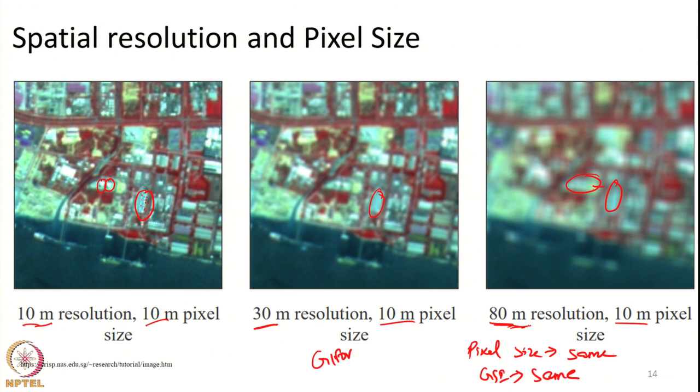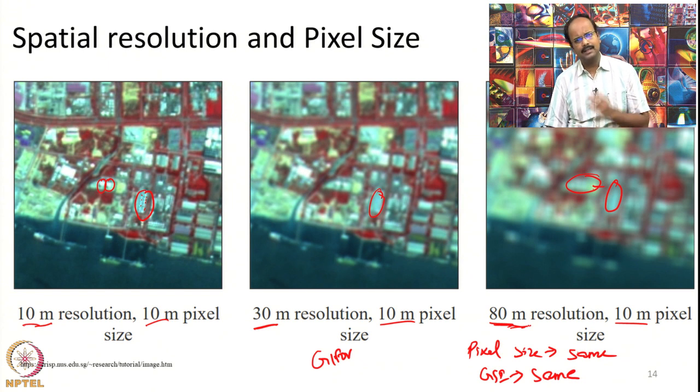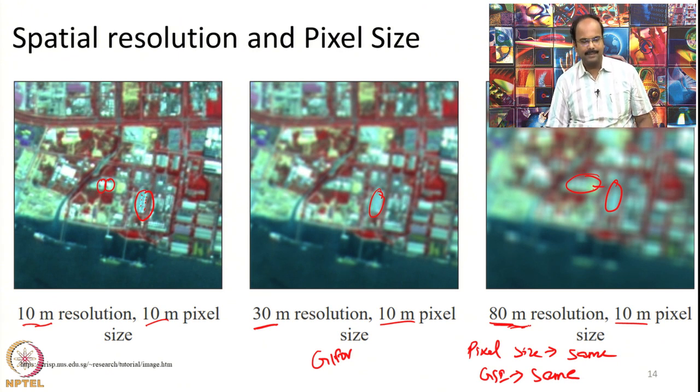Hence the GIFOV size influences our ability to resolve features, but GSI determines the pixel size — they can be different, they are not one and the same. In most remote sensing systems the GIFOV and GSI are set equal, but they can differ. We have seen an example where GSI is smaller than GIFOV — oversampling. But the reverse can also happen — the GSI can occur at a larger distance than the GIFOV, which we will now see.